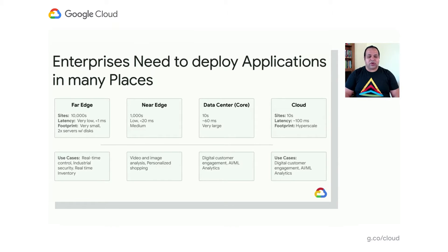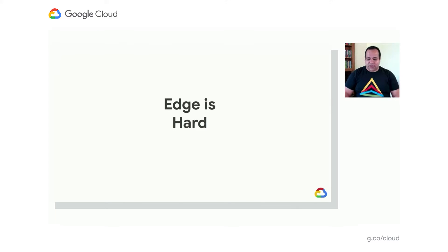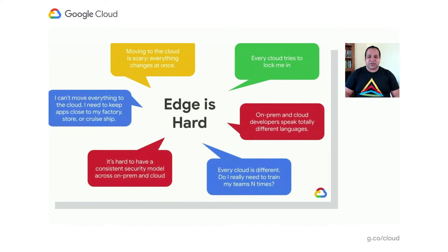Some use cases at the far edge include real-time control and industrial security. Or you have the near edge, with fewer sites, less latency sensitivity, for video and image analysis and processing. Or you look at traditional data center core or cloud. The challenge is how do you deploy across all of these, as you're migrating applications, every site is different, and you need to deploy the application multiple times.